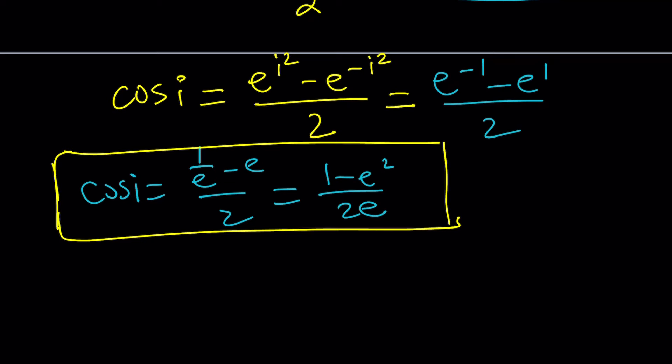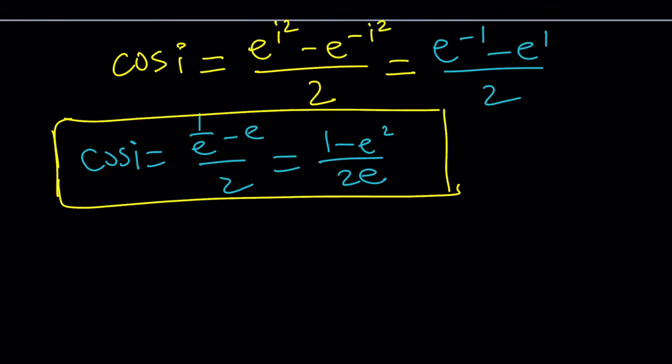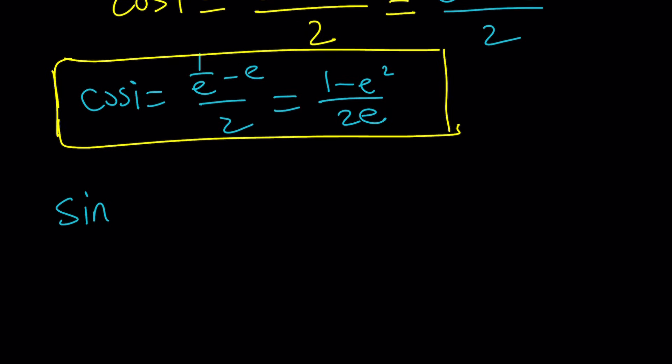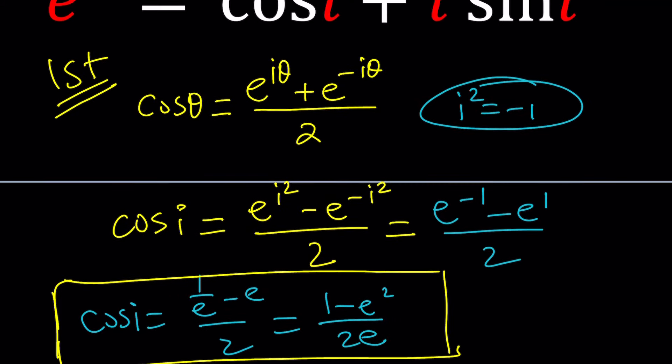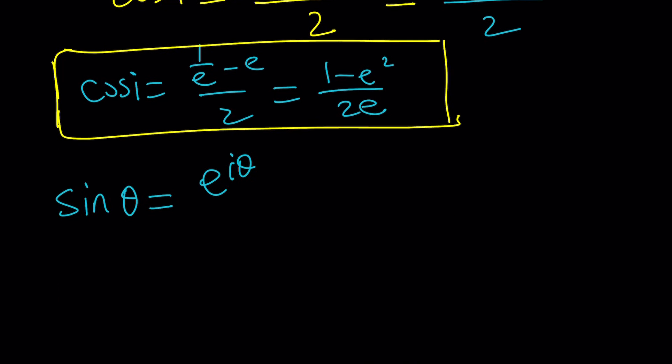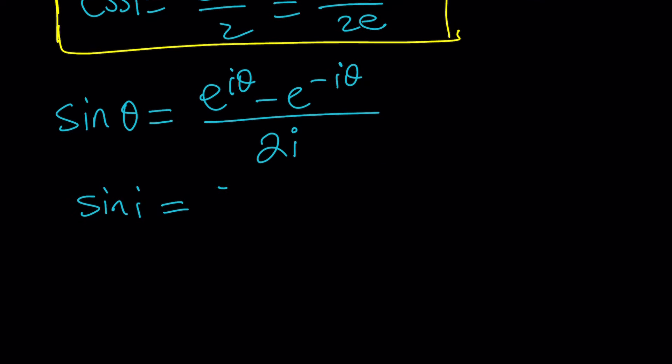Now let's go ahead and save that for future use and try to evaluate sine of i. To find sine of i we're going to use a formula for sine of θ in general. It's e to the iθ, so that's kind of similar to the cosine formula with slight variations like a minus sign here, and at the bottom instead of a 2 we have 2i because sine is awesome. Now from here you can find sine i as e to the power i squared minus e to the negative i squared divided by 2i.